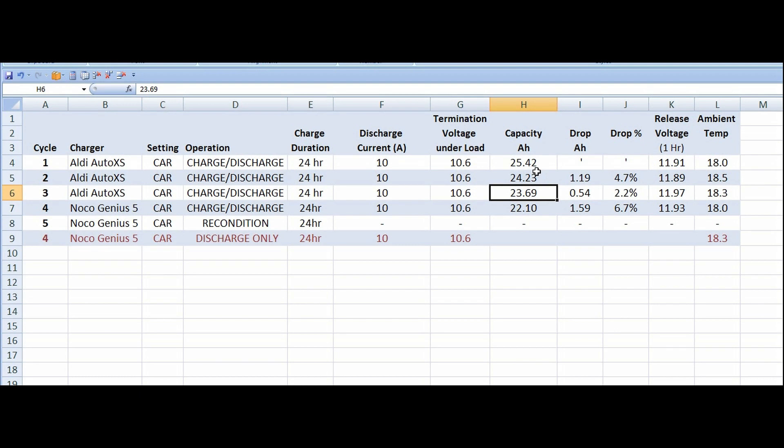As you know, when the battery is discharged, both plates get covered with lead sulfate. And then as you recharge, the lead sulfate is then electrolyzed back into high sulfuric acid. In theory, if it was a perfect process, you would end up with the same capacity each time. But you can see it's dropping. And on the three Aldi Auto XS charges, test one, two, and three, you can see it dropped by 1.19 and 0.54.